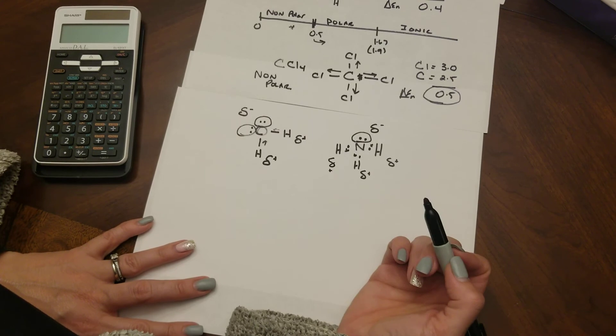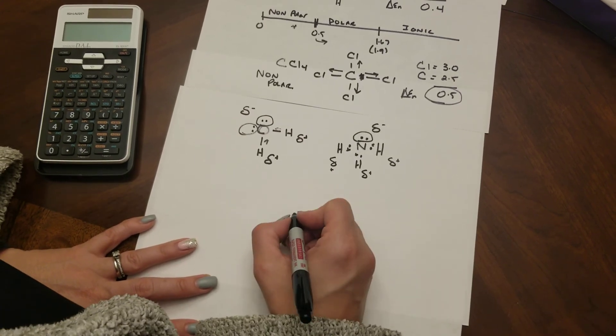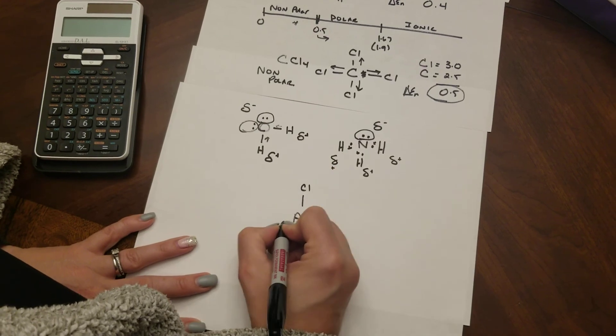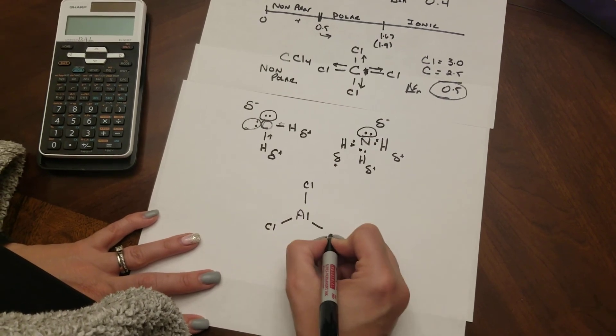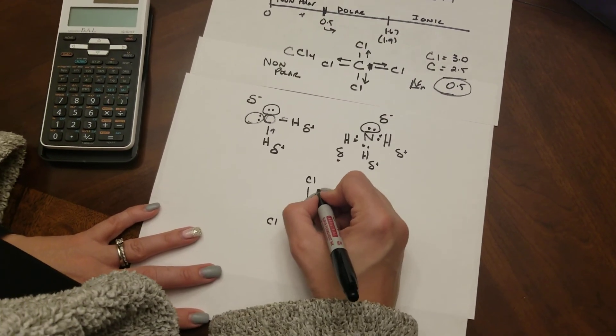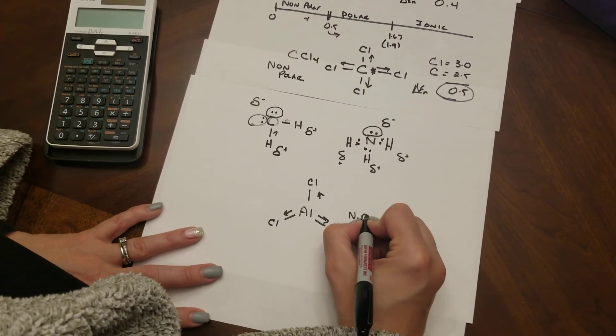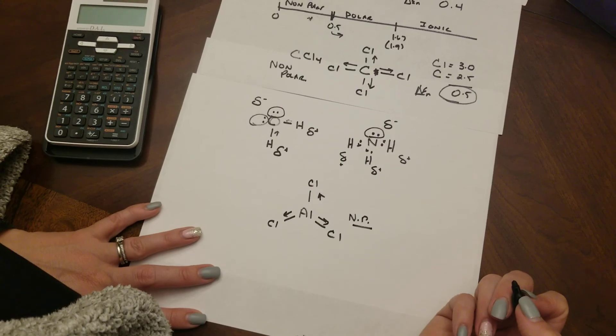If there is no unbonded pair of electrons another example being aluminum trichloride has no free electron pair then these guys all with their electron poles will make this molecule non-polar. I hope this helps.